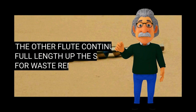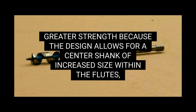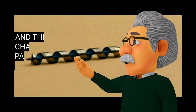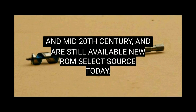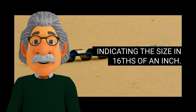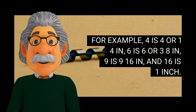The other flute continues full length up the shank for waste removal. The Irwin bit may afford greater space for waste removal, greater strength because the design allows for a center shank of increased size within the flutes compared to the Jennings bits, or smaller manufacturing costs. This style of bit was invented in 1884, and the rights sold to Charles Irwin who patented and marketed this pattern the following year. Both styles of auger bits were manufactured by several companies throughout the early and mid-20th century, and are still available new from select sources today. The diameter of auger bits for hand braces is commonly expressed by a single number, indicating the size in sixteenths of an inch. For example, four is 4/16 or 1/4 inch, six is 6/16 or 3/8 inch, nine is 9/16 inch, and sixteen is one inch.